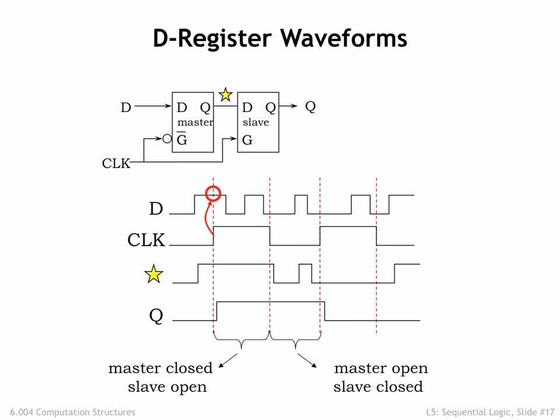Now let's figure out what the slave is doing. Its output signal, which also serves as the output of the D register, is shown as the bottom waveform. On the rising edge of the clock, the slave latch opens and its output will follow the value of the star signal. Remember though that the star signal is stable while the clock is high since the master latch is closed. So the Q signal is also stable after an initial transition if the value saved in the slave latch is changing. At the falling clock edge, the slave goes from open to closed, sampling the value on its input and entering memory mode. The sampled value then becomes the output of the slave latch as long as the latch stays closed. You can see that the Q output remains stable whenever the clock signal is low.